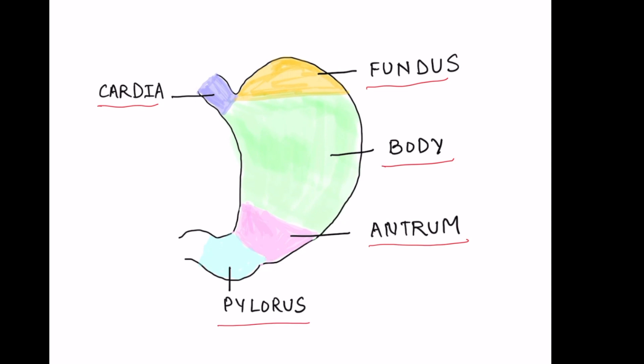Let's start with the stomach anatomy. The stomach has five distinct sections: the first one is the cardia, second is the fundus, third is the body, then the antrum and pylorus. For gastric ultrasound, our interest is in the antrum because it is the only easily identifiable section on ultrasound in the epigastric region.